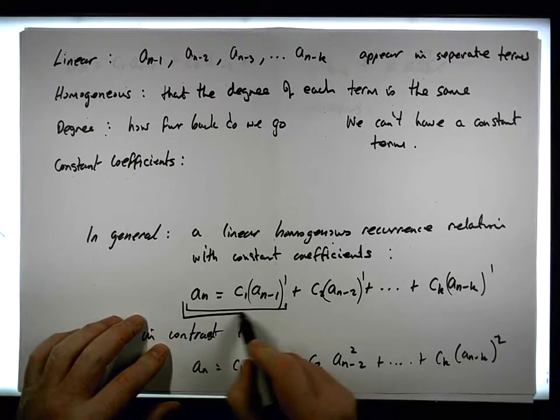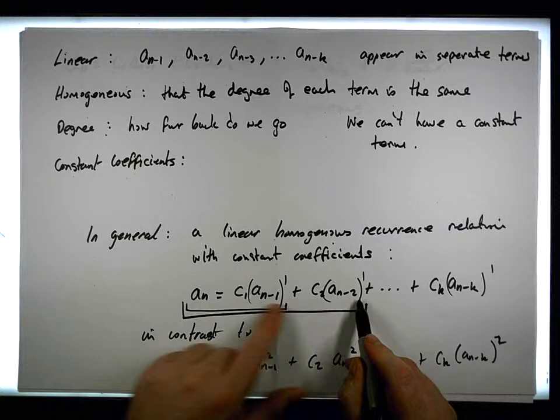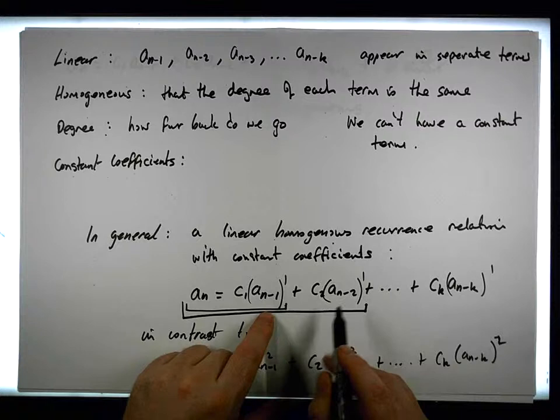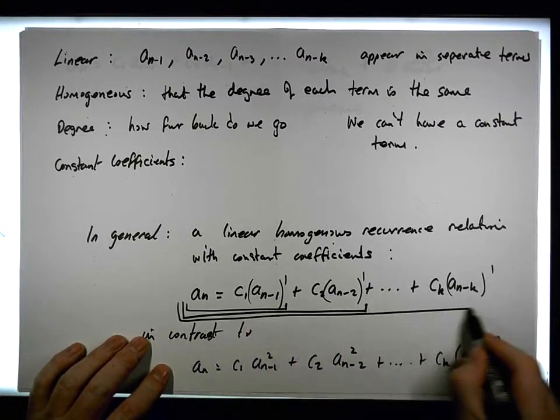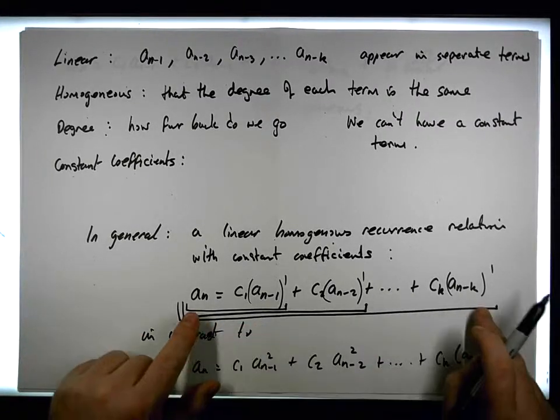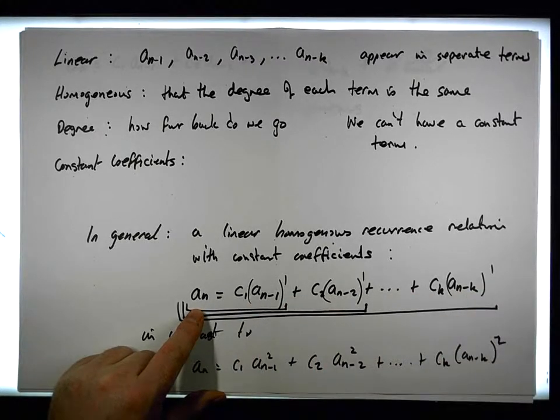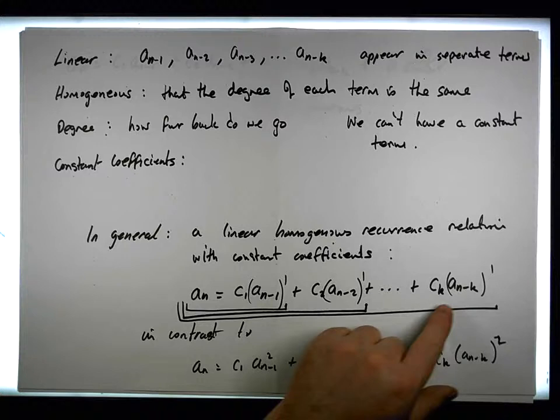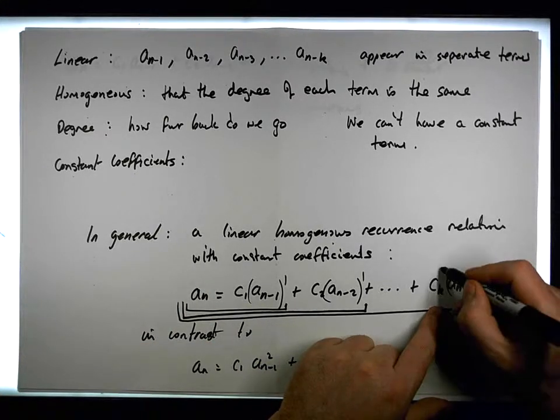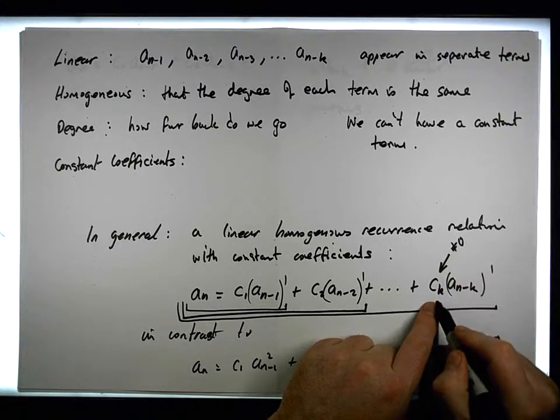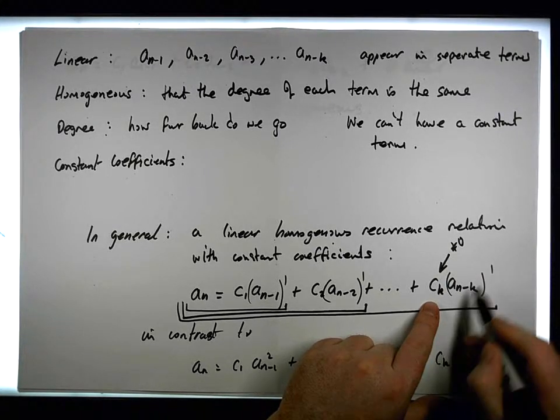And if we went back k terms, it would be of degree k, because we're defining a_n in terms of k previous terms. The important thing is, if it is of degree k, well, then that c_k cannot be equal to, not equal to 0, because if it was equal to 0, we wouldn't have that there.